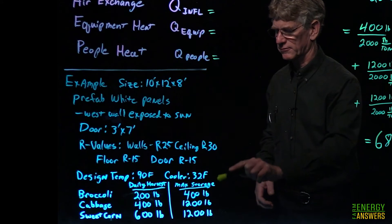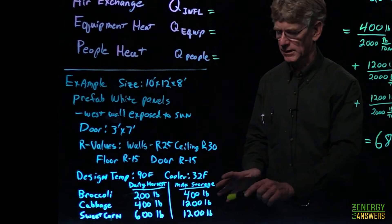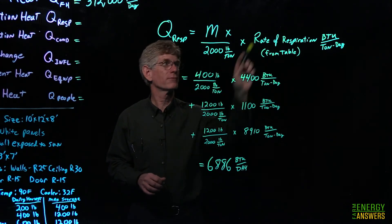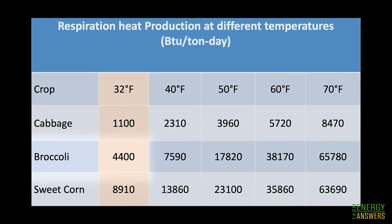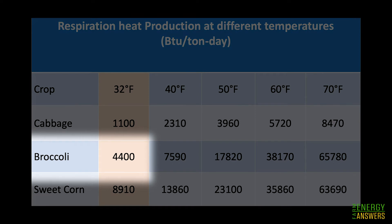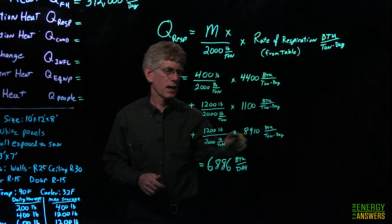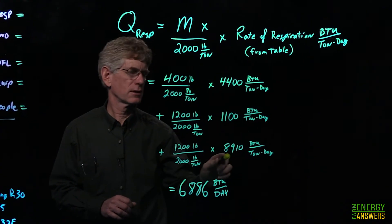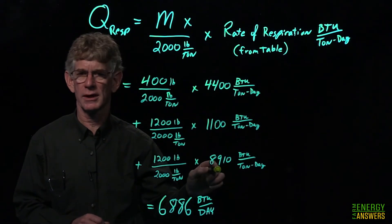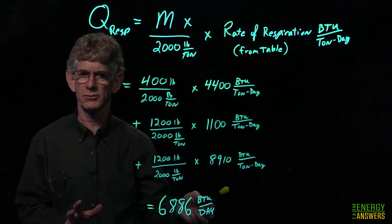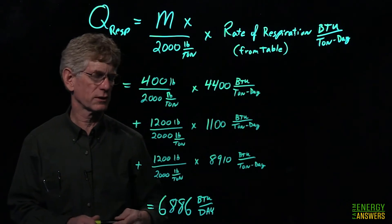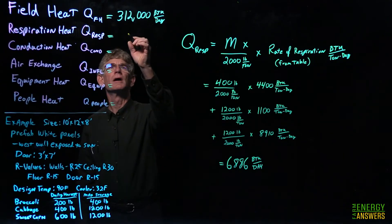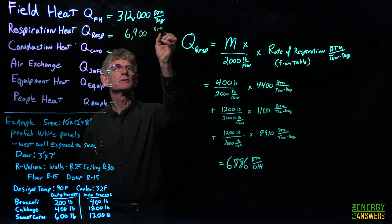In our example, we look at the amount of produce stored in the cooler at any one time. For broccoli: 400 lbs ÷ 2,000 = 0.2 tons, and from the chart at 32°F, broccoli has a respiration rate of 4,400 BTUs per ton per day. We do the same for cabbage and sweet corn. One important note: sweet corn generates about nine times more heat than cabbage at 32°F, so you must be aware of what you're storing. In total, we get about 6,900 BTUs per day from respiration heat.